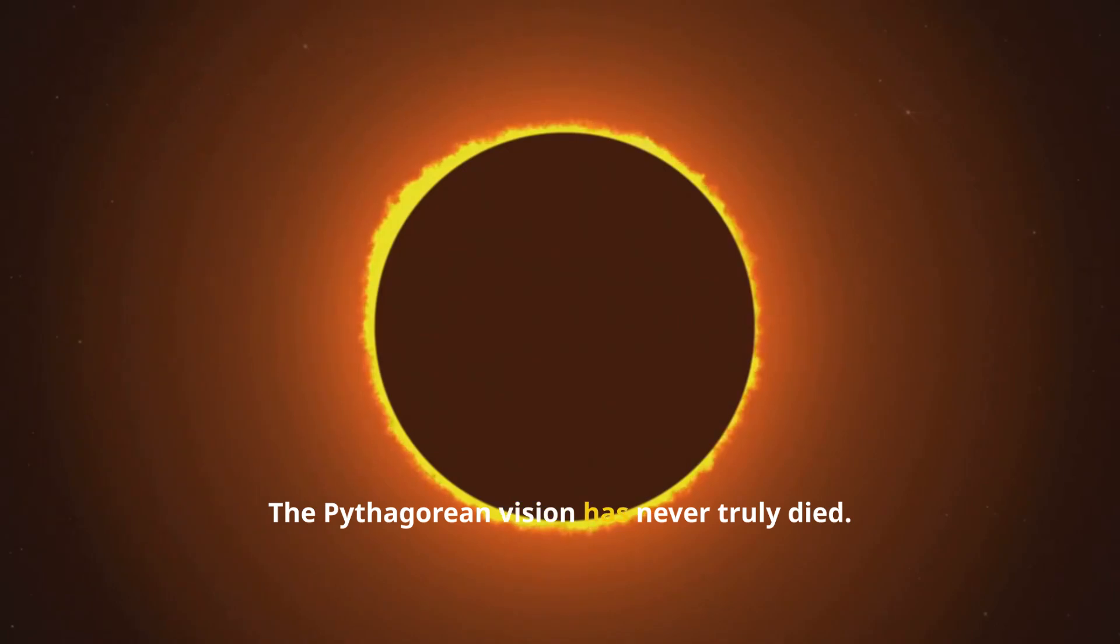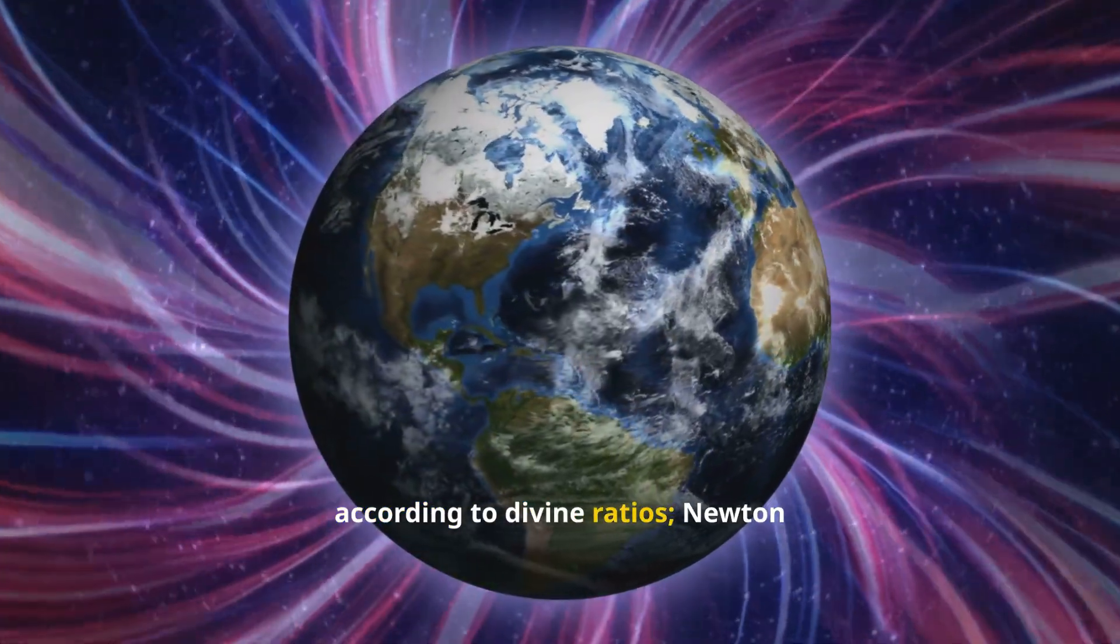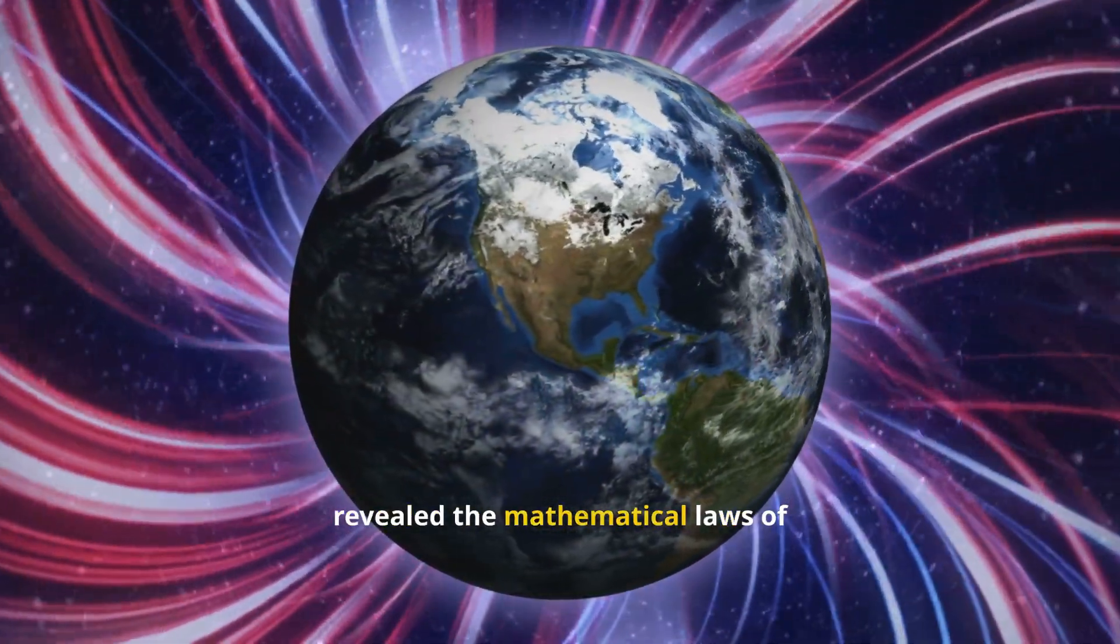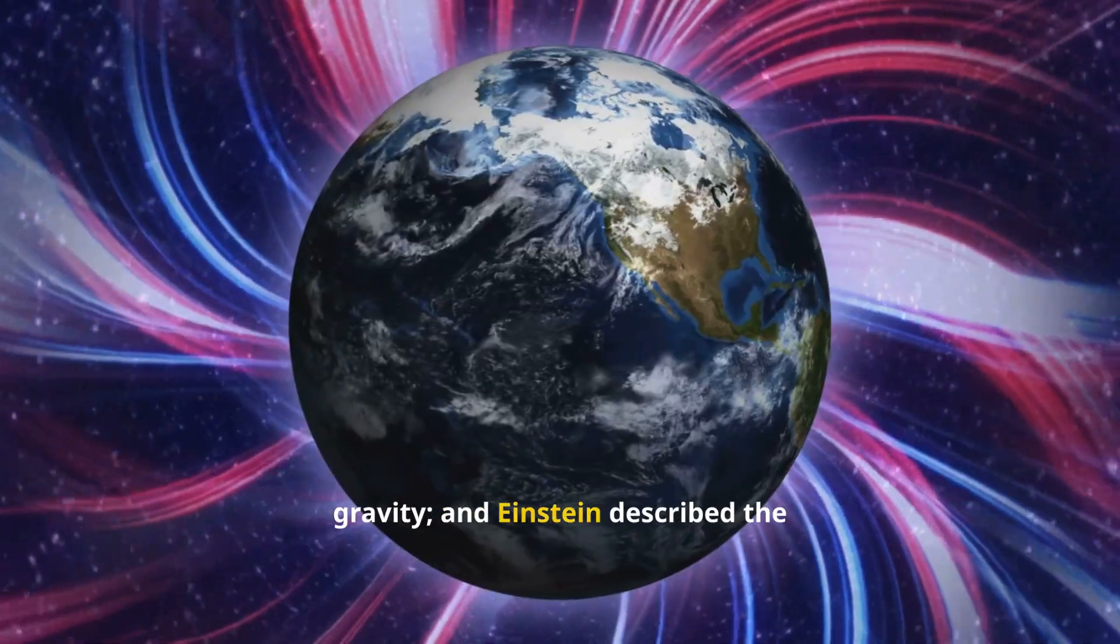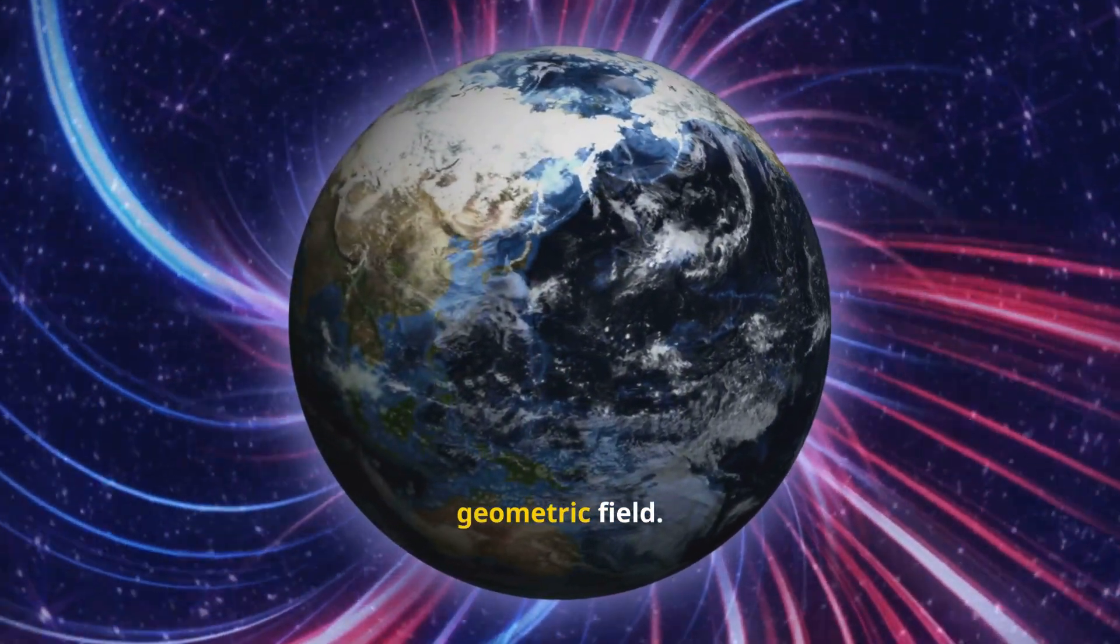The Pythagorean vision has never truly died. Centuries later, Kepler, Newton, and Einstein each rediscovered aspects of this cosmic harmony. Kepler wrote that the planets move according to divine ratios. Newton revealed the mathematical laws of gravity. And Einstein described the fabric of space-time itself as a geometric field.